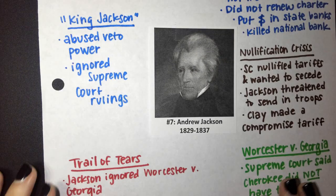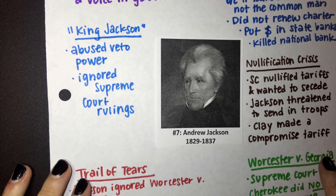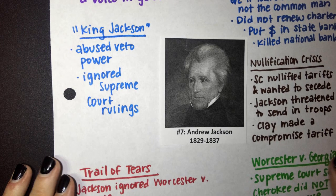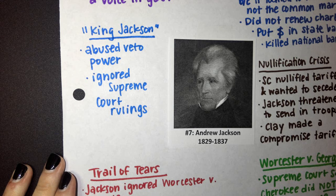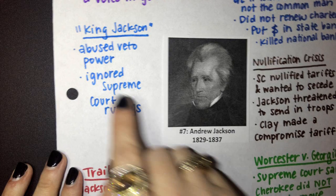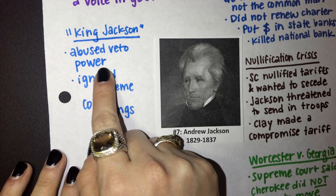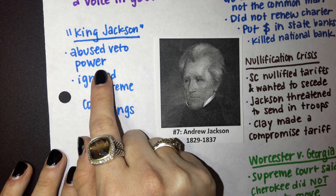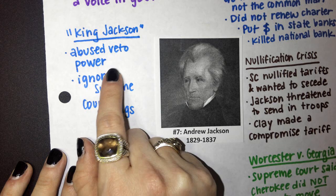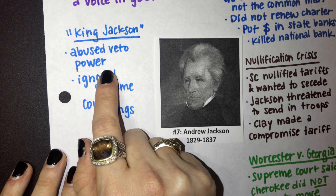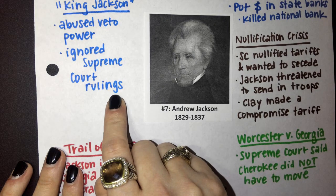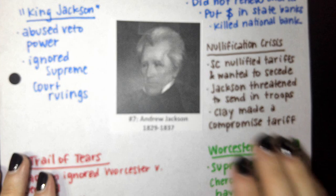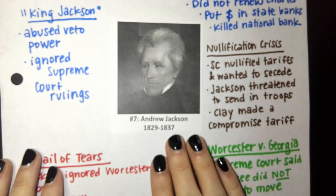Andrew Jackson is well known in political cartoons — specifically one where he is dressed as a king. Many people compared him to a king or a tyrant who abused his powers. He was one of the first presidents to abuse his veto power, frequently vetoing laws passed by Congress. He was also known for ignoring Supreme Court rulings and trying to make the executive branch way too strong.